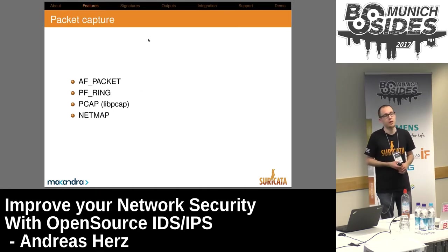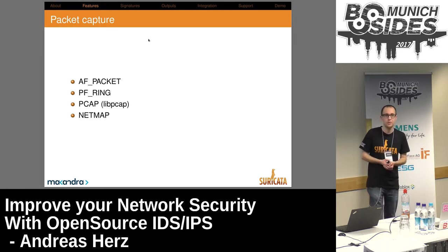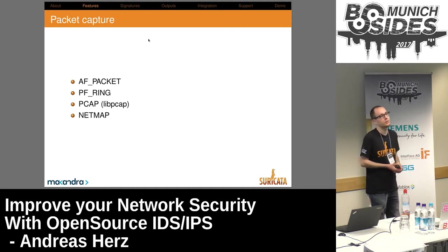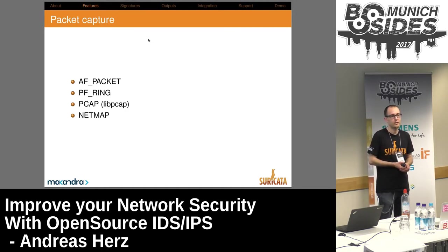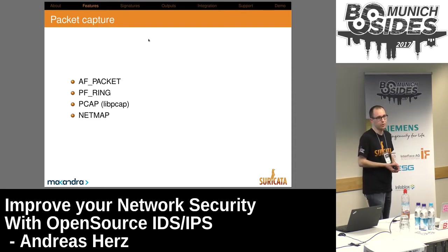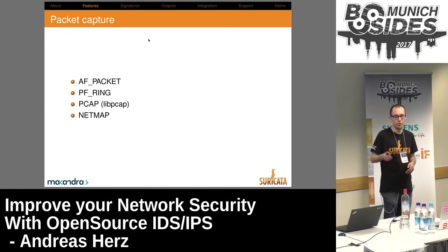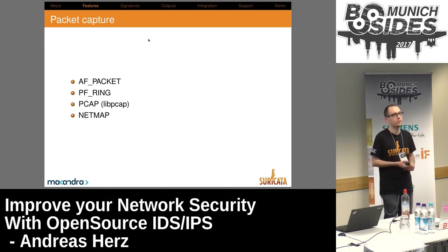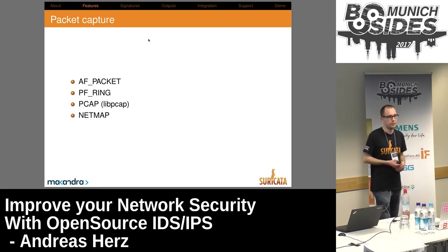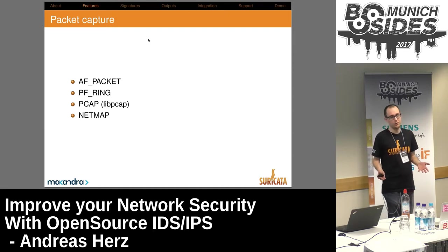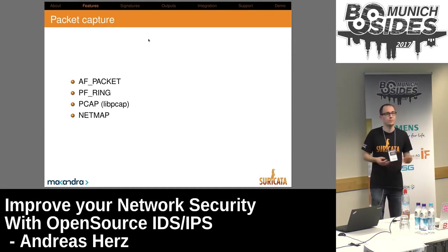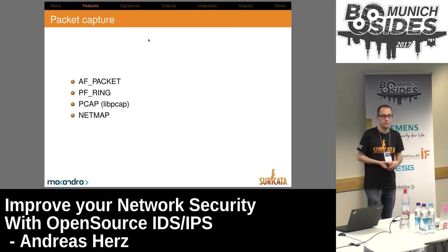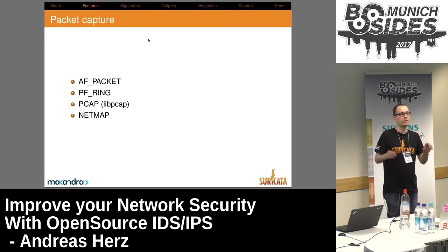For acquiring packets on your network you have several options. On a Linux-based system I recommend AFPacket, especially if you're using a modern Linux distribution since AFPacket version 3 was released — it kind of makes PFRing obsolete. PFRing is another option; there's also a commercial version called PFRing Zero Copy. From our view, AFPacket version 3 can achieve the same performance nowadays. On every system you can use libpcap, but it's the slowest option — not recommended for 10 or 20 Gigabit. For BSD, such as pfSense users, we have NetMap, which is quite similar to AFPacket.